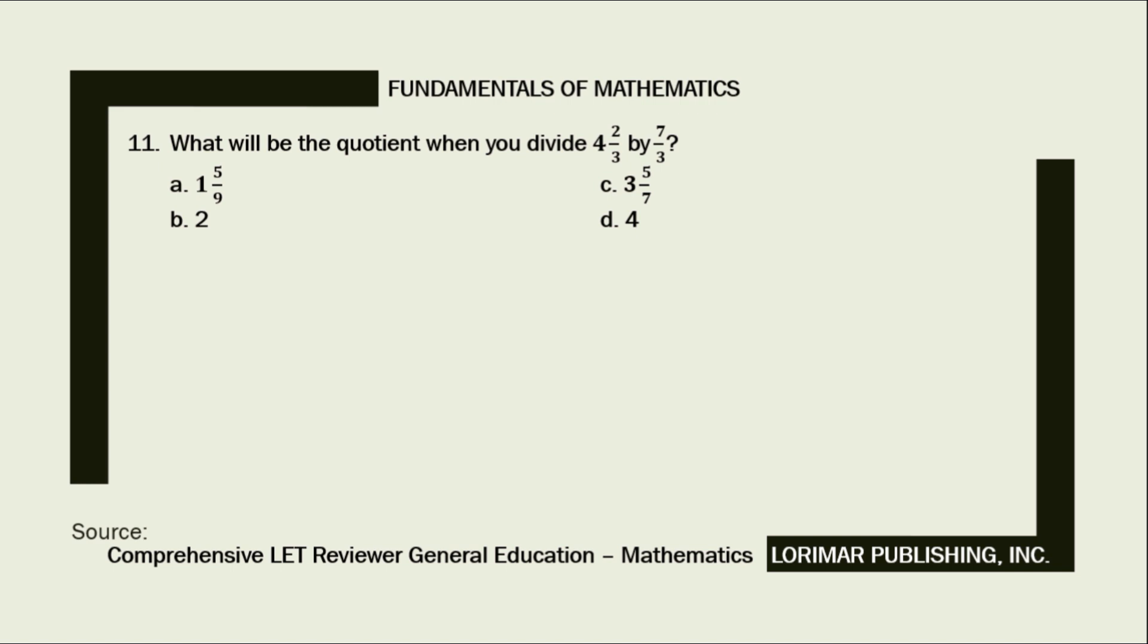Problem number 11. What will be the quotient when you divide 4 and 2/3 by 7/3? A. 1 and 5/9. B. 2. C. 3 and 5/7. D. 4.